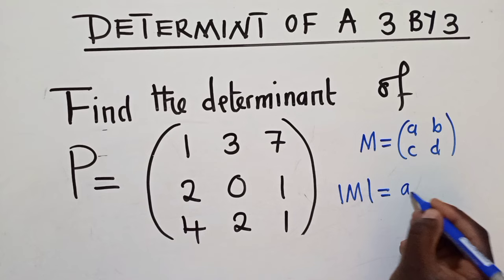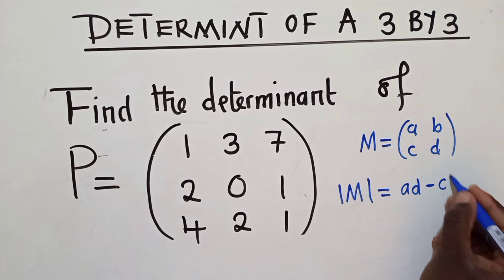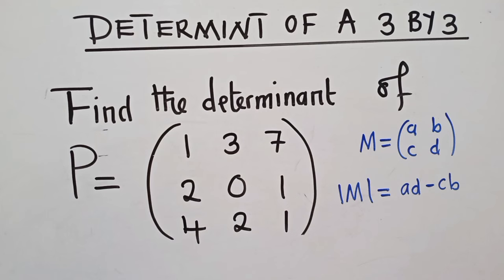Minus C times B, which is CB, like that. So this is how you get to find the determinant of a 2 by 2 matrix.